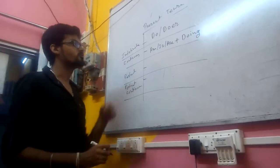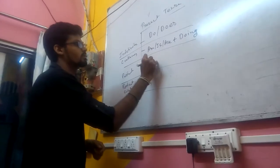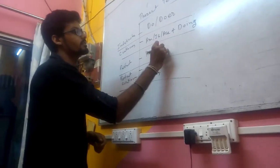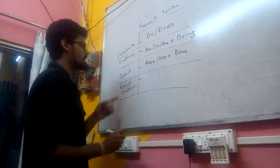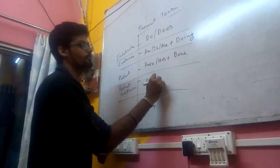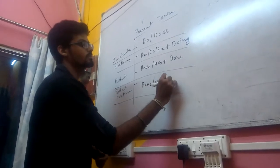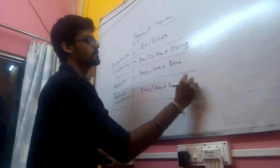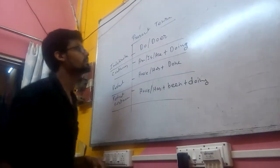For perfect, it's 'have/has' plus 'done.' For perfect continuous, it's 'have/has' plus 'been' plus 'doing.'